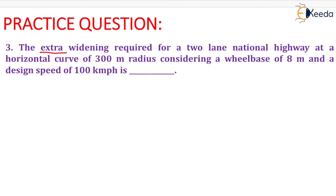Question is given as: the extra widening required for a two-lane national highway at a horizontal curve of 300 meter radius considering a wheelbase of 8 meter and a design speed of 100 kilometer per hour.